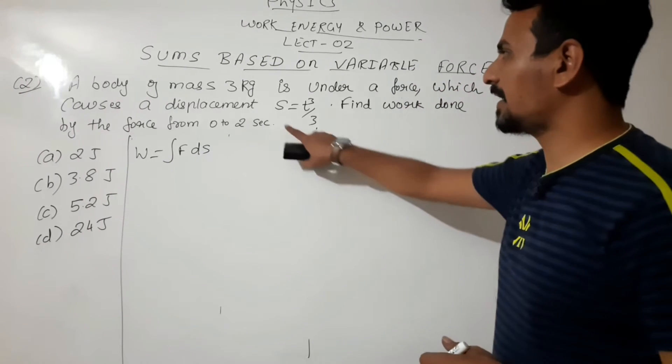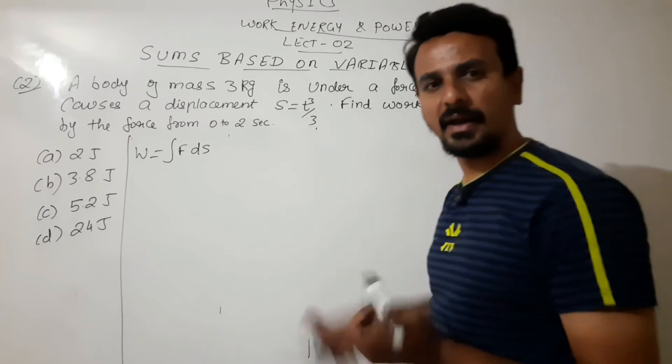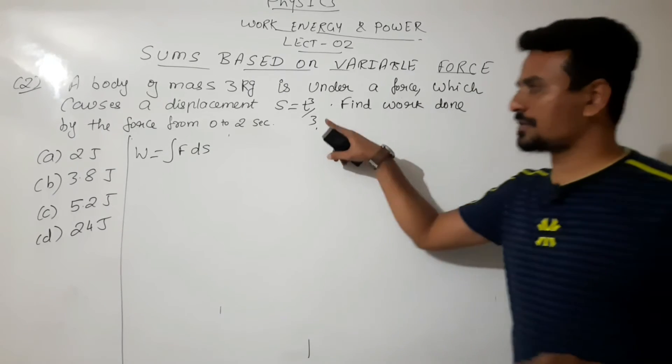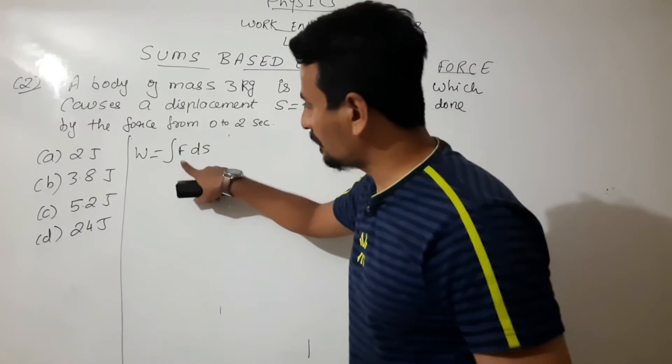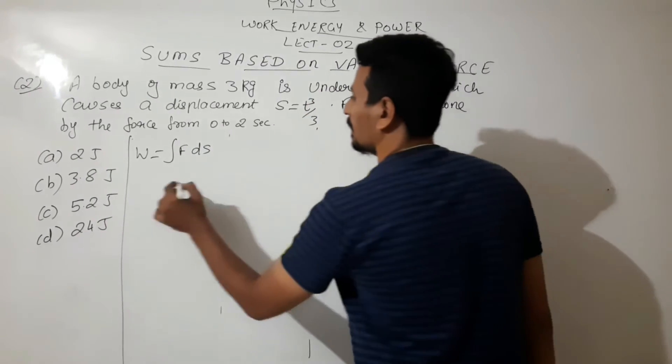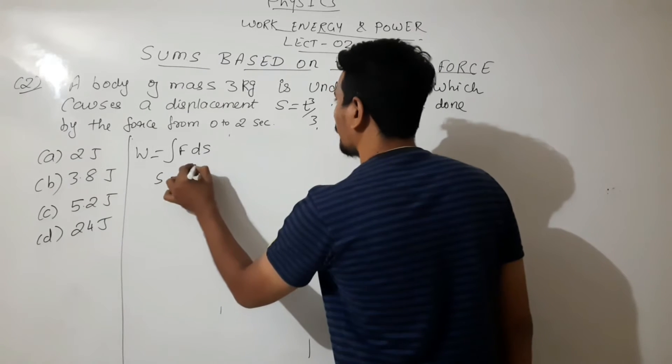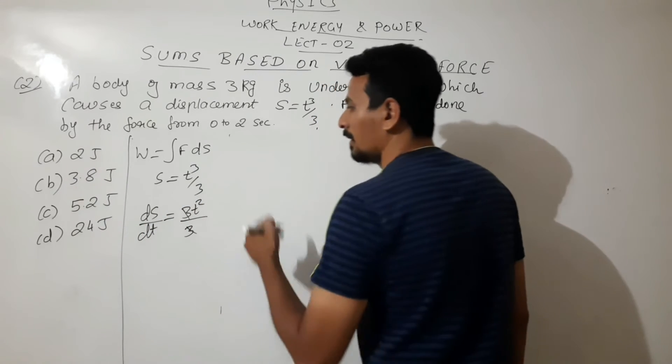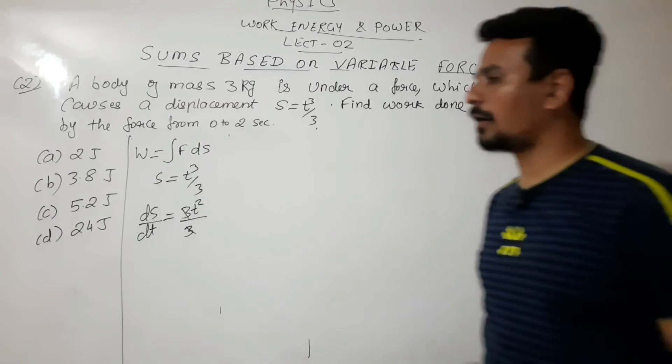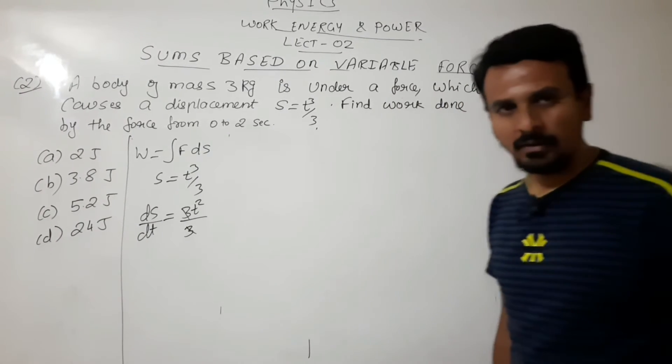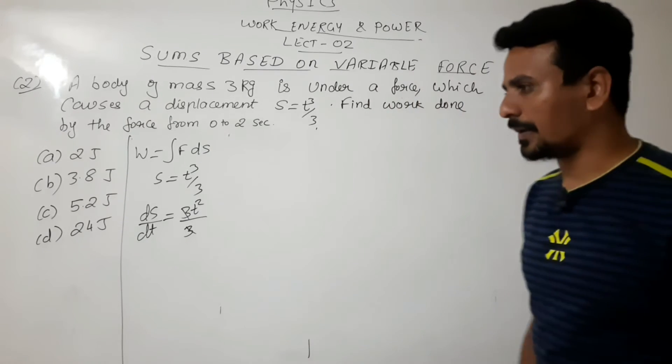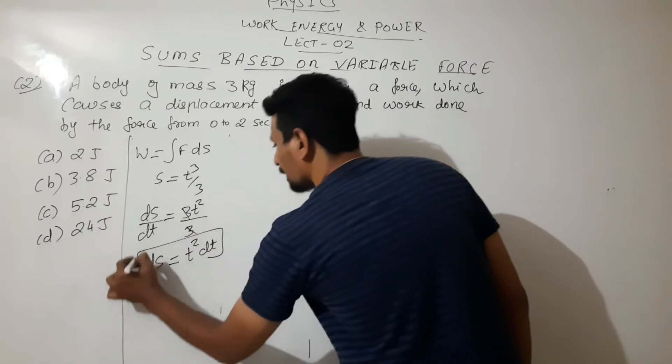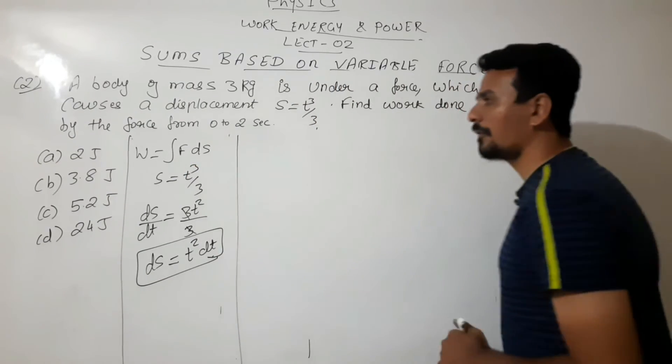F can be written as m into a. By differentiating this two times we will find acceleration, because ds/dt will be velocity and then dv/dt will be acceleration. So by using this equation we will find acceleration and with that we will calculate F. First of all let us differentiate this. S = t³/3. So ds/dt will be 3t²/3. I hope you know the formula of differentiation: d/dx of x^n will be n times x^(n-1). So in this case ds = t² dt. So we have calculated the value of ds.